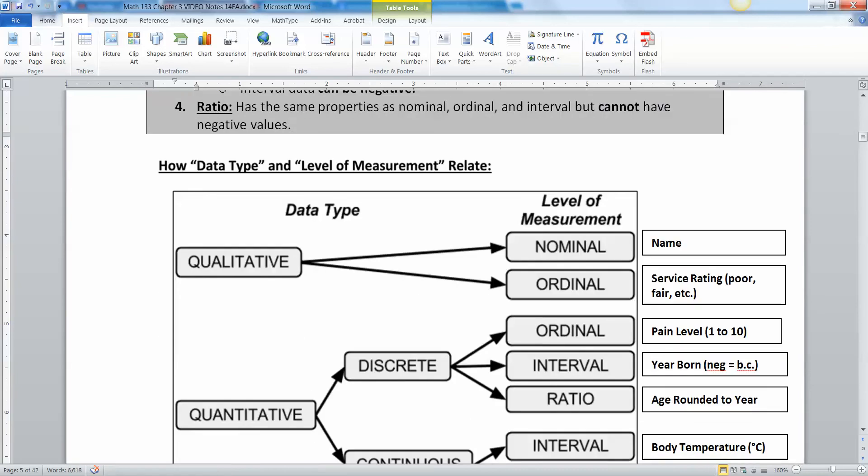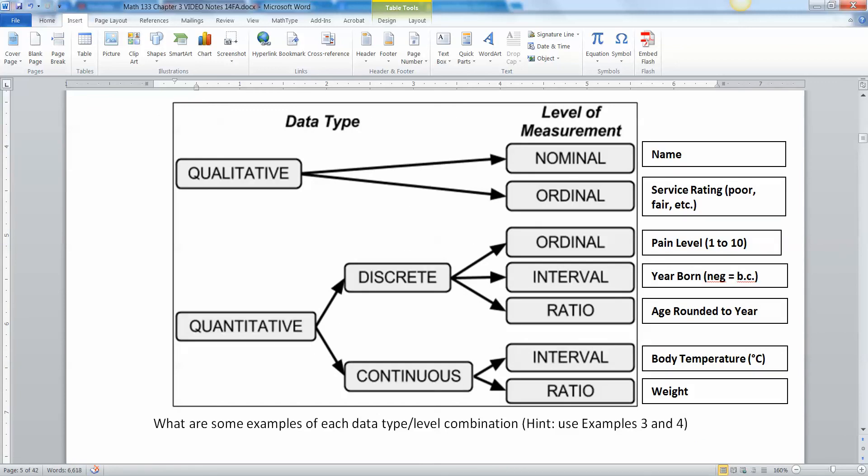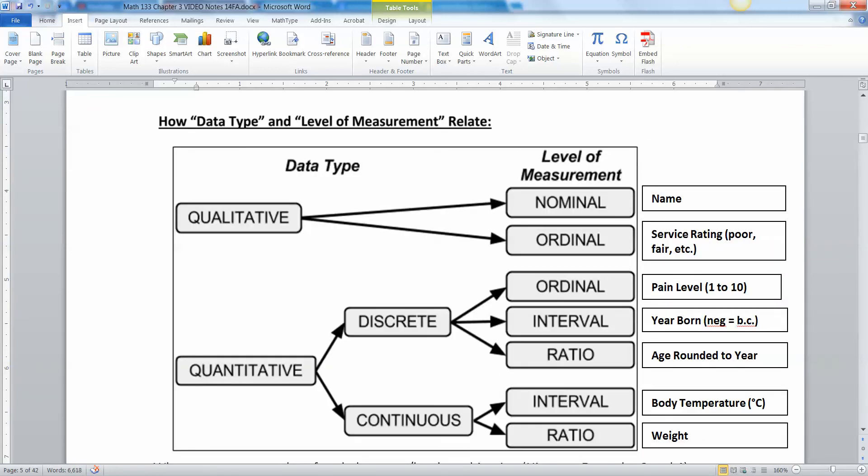Okay, so we have a little diagram here to kind of help you figure it out. Qualitative data falls into either nominal or ordinal. For example, your name is nominal, your social security number is nominal, your zip code is nominal.